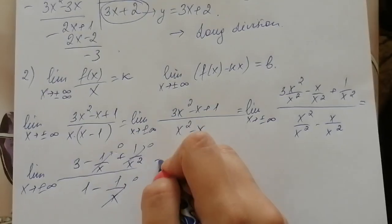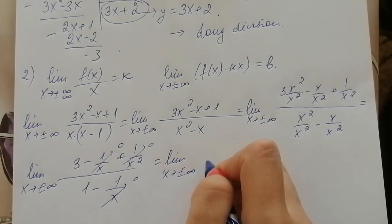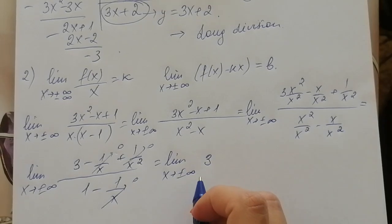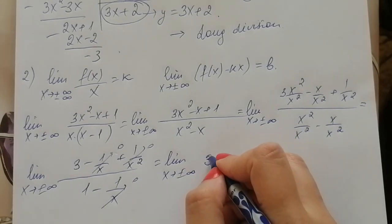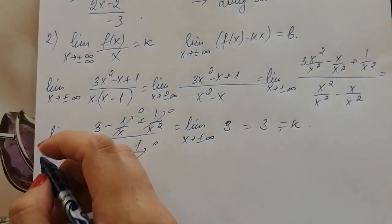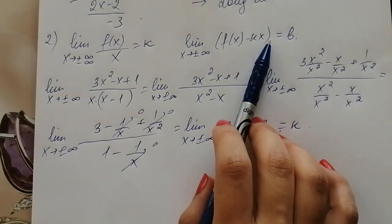Therefore we get limit 3 over 1, which is 3, and limit when x tends to infinity, 3 is equal to just 3 and that's the value of k.